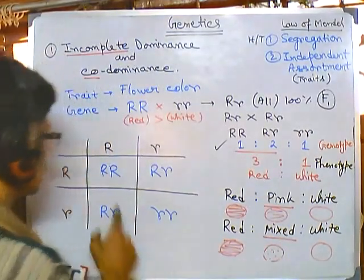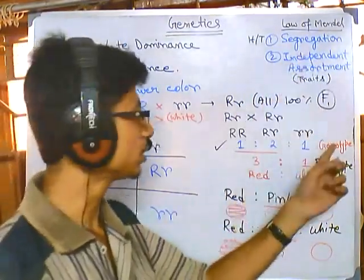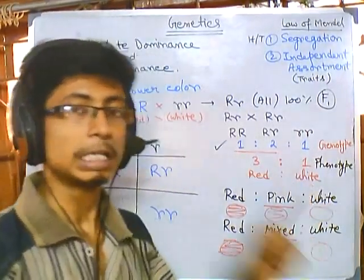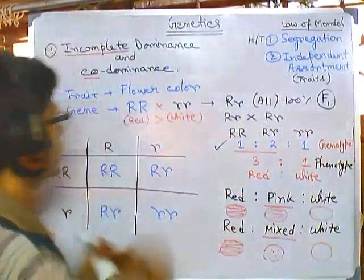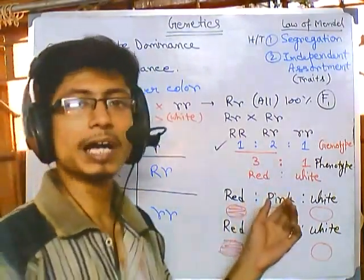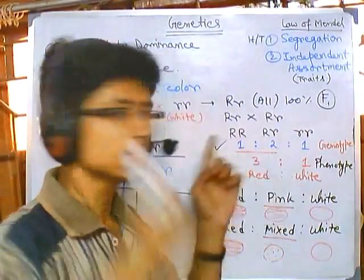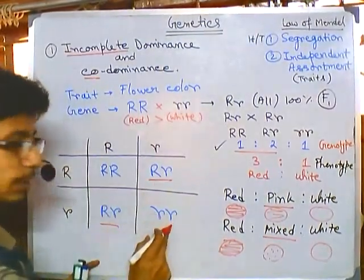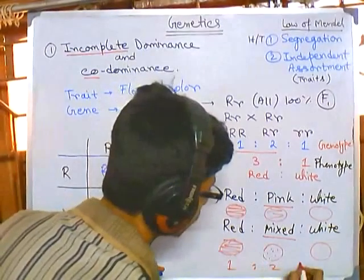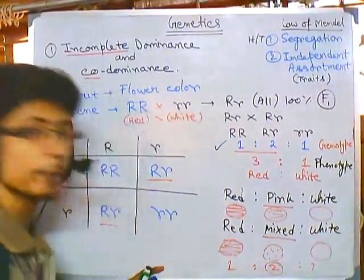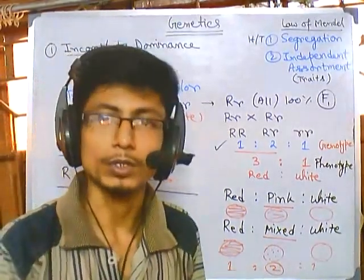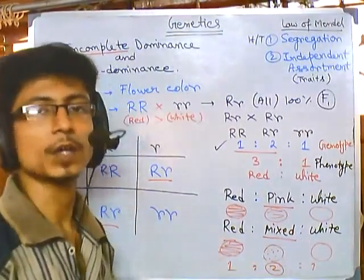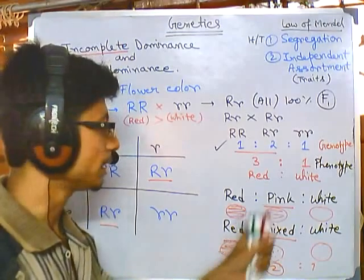Now let's look at the ratios. For a Mendelian monohybrid cross: genotypic ratio is 1:2:1 and phenotypic ratio is 3:1. In the case of incomplete dominance and codominance, the phenotypic ratio equals the genotypic ratio — both are 1:2:1. The highest proportion of the phenotype is the new third kind: the pink flower in incomplete dominance or the mixed red-and-white in codominance. The highest percentage of F2 organisms show this new intermediate type.